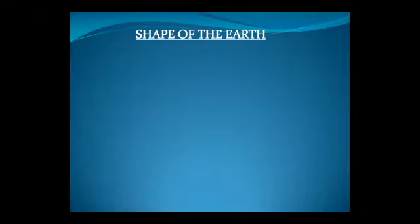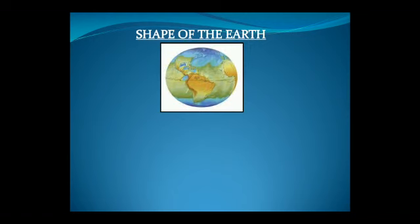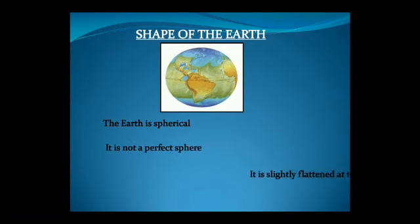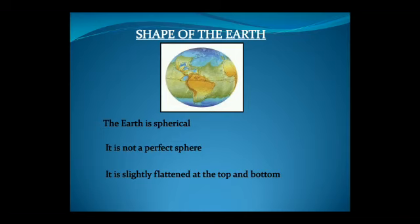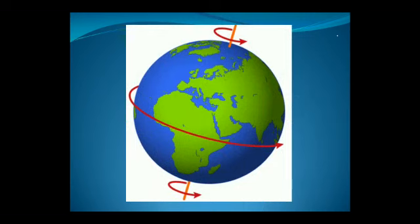Shape of the Earth: The Earth is spherical in shape. However, it is not a perfect sphere. It is slightly flattened at the top and bottom. The flat end at the top is known as the North Pole and the one at the bottom is known as the South Pole.